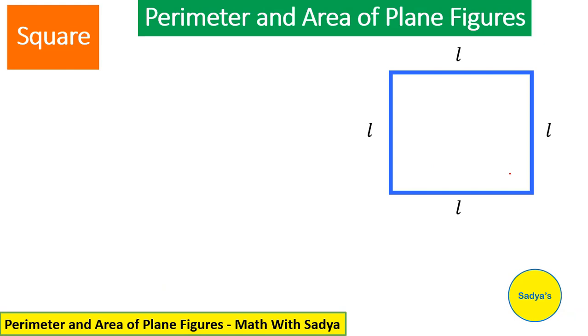Square ke baare mein hume pata hai ke square ki 4 sides equal hoti hai. We have a square over here, jiski length is L. For perimeter of square, we will sum all sides. Jiska matlab hai L plus L plus L plus L. And since these are like terms, we can add them up, so we get 4L. So, the perimeter of a square is 4 times length.